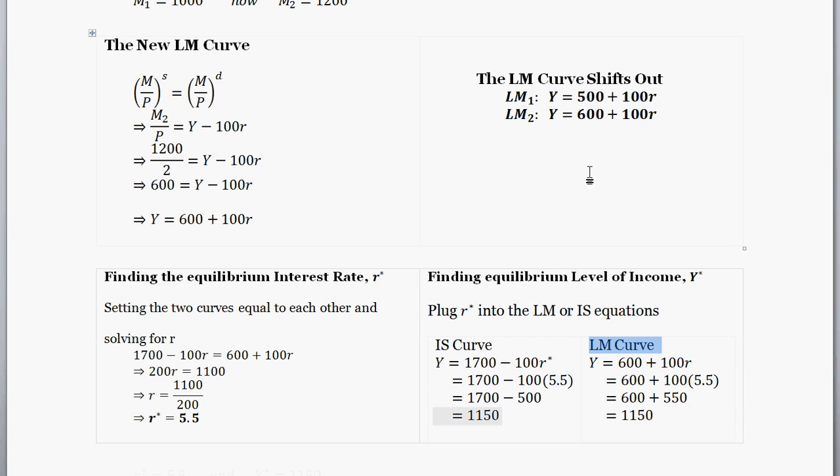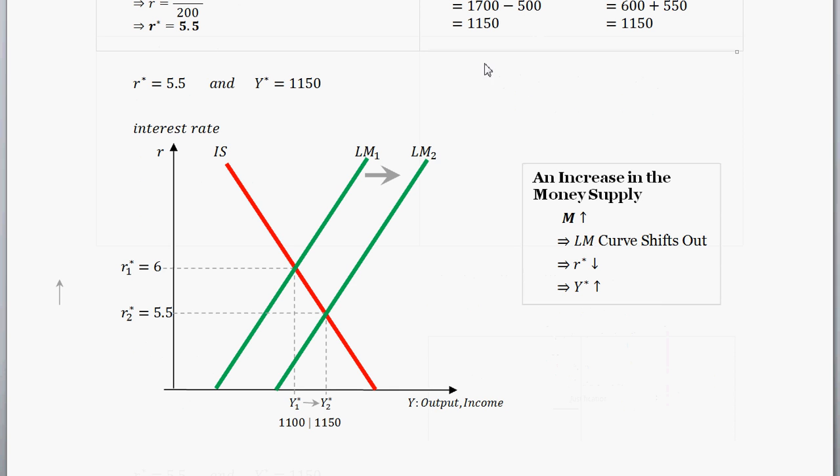Plugging into our new LM curve equation that we just found, we find equilibrium output of 1150. Awesome. So we have our new equilibrium interest rate, 5.5, and our equilibrium output of 1150.